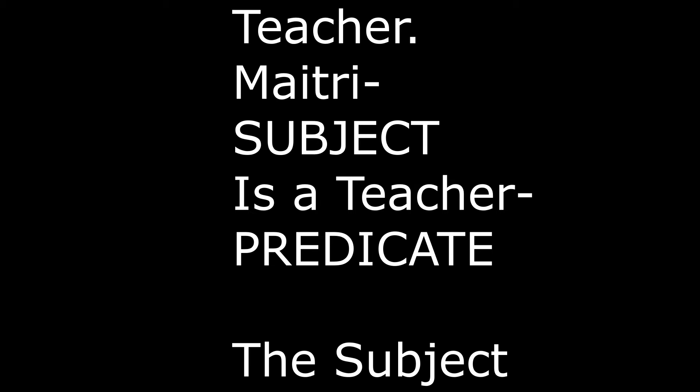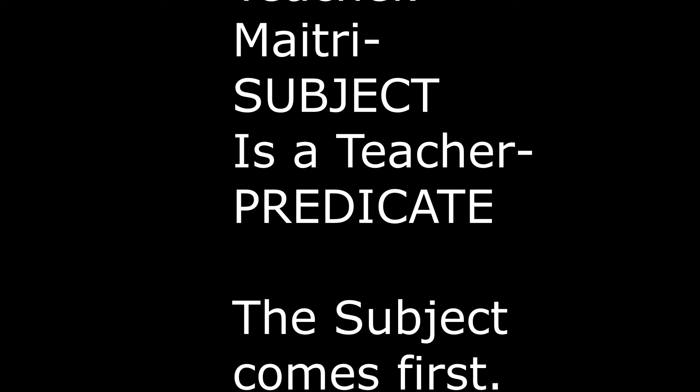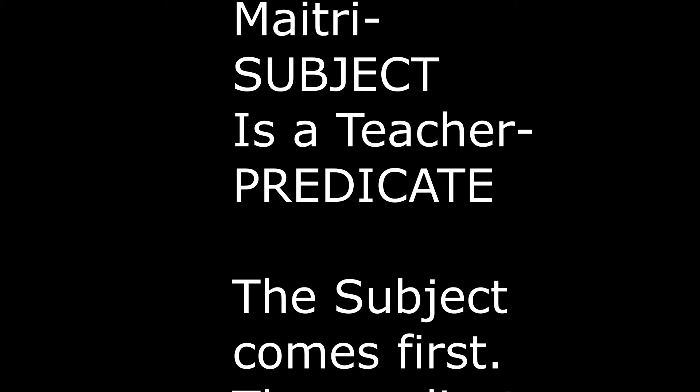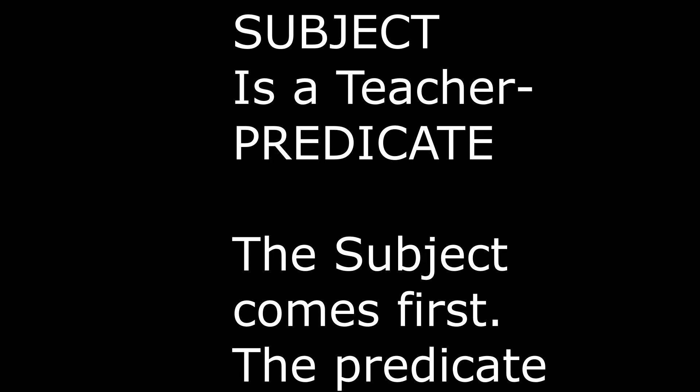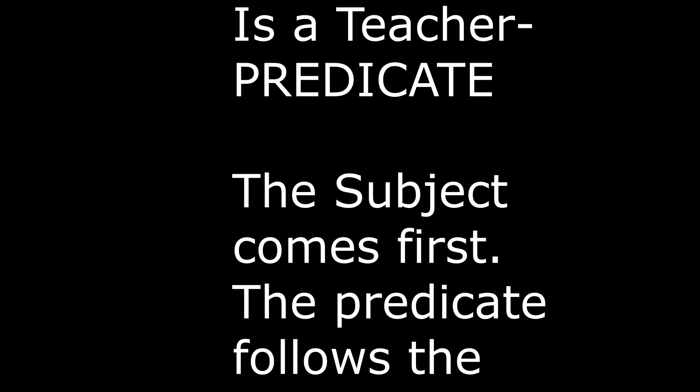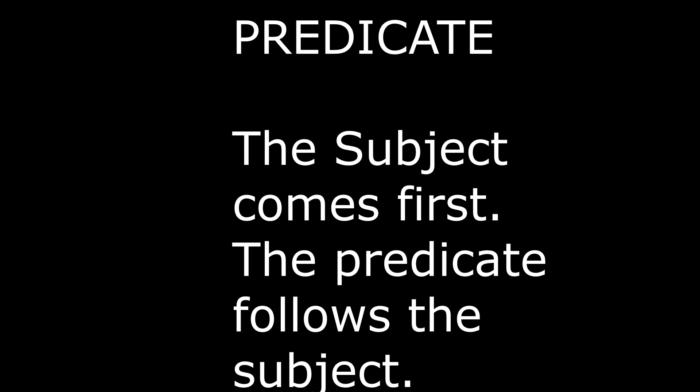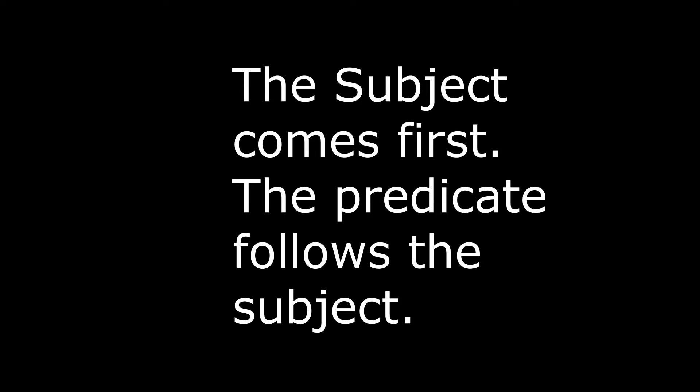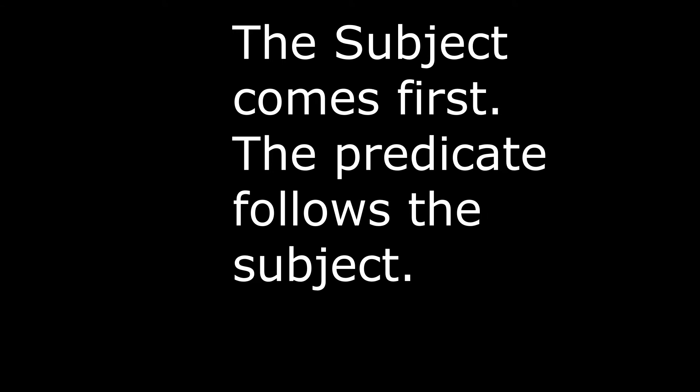The second part says something about the subject. This part is called the predicate of the sentence. In the above sentence, 'is a teacher' is the predicate. Usually the subject comes first, and the predicate follows the subject.